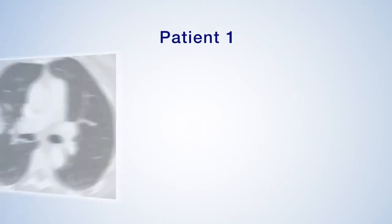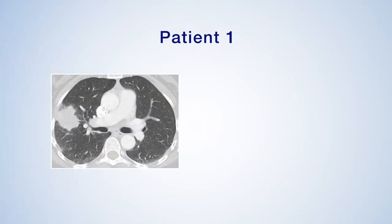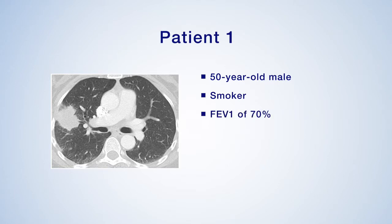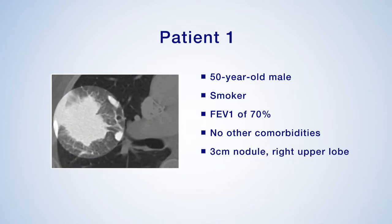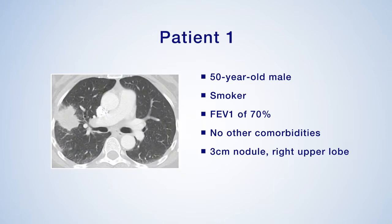This patient presents for further evaluation of a pulmonary nodule that was incidentally found on imaging obtained for unrelated reasons. The patient is a 50-year-old male with a significant smoking history, relatively preserved pulmonary function with an FEV1 of 70%, and no other comorbidities. The CT scan shows a 3-centimeter nodule in the right upper lobe that has moderate uptake on PET imaging.